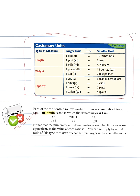So three feet over one yard, two thousand pounds over one ton, four quarts over one gallon, these are all from the chart above. But notice that the numerator and denominator of each fraction above are equivalent. So the value of each ratio is one. You can multiply by a unit ratio of this type to convert or change from larger units to smaller units, moving back and forth between the two.